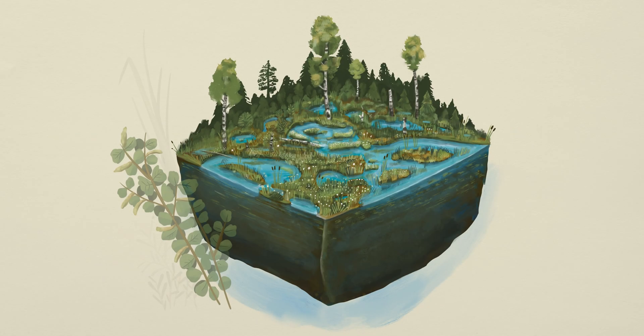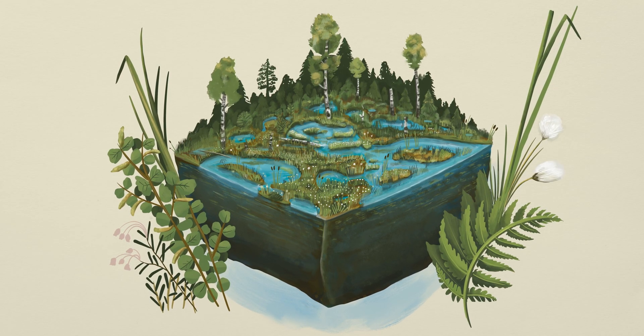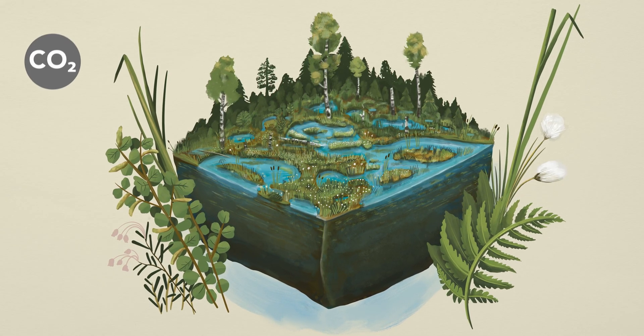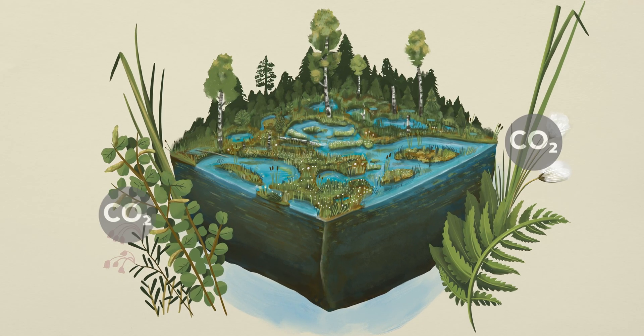Plants growing in intact peatlands or mires are adapted to the oxygen-poor conditions of the permanently wet peatland soil. Like other plants to grow, they take up the greenhouse gas carbon dioxide from the atmosphere through photosynthesis.